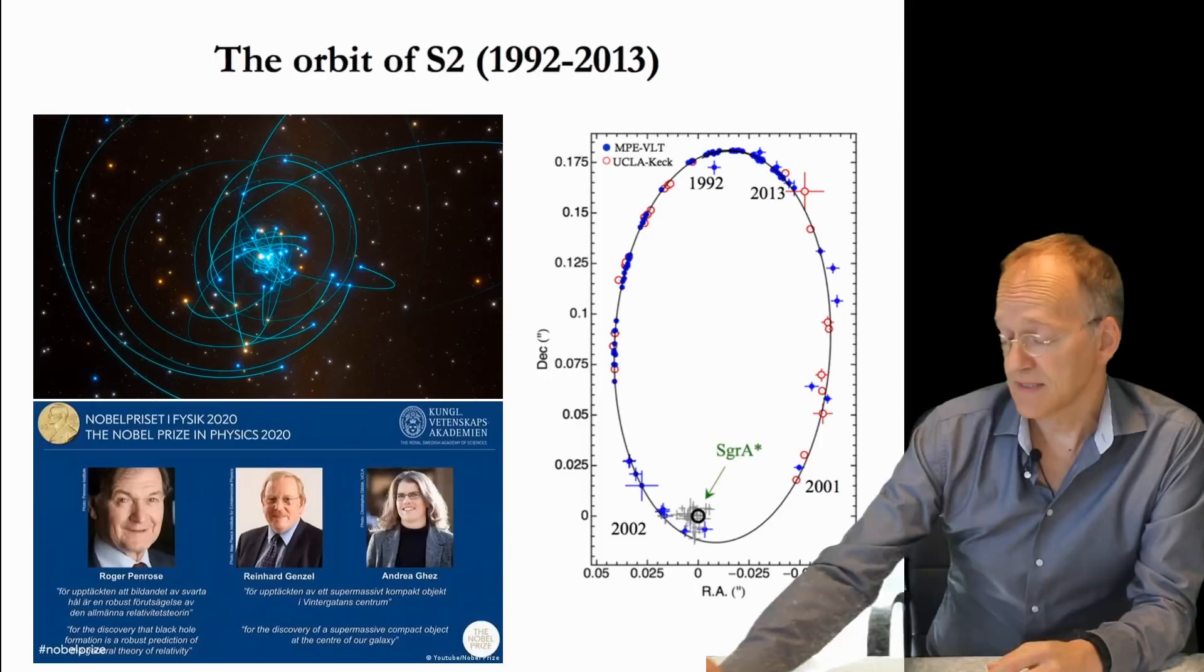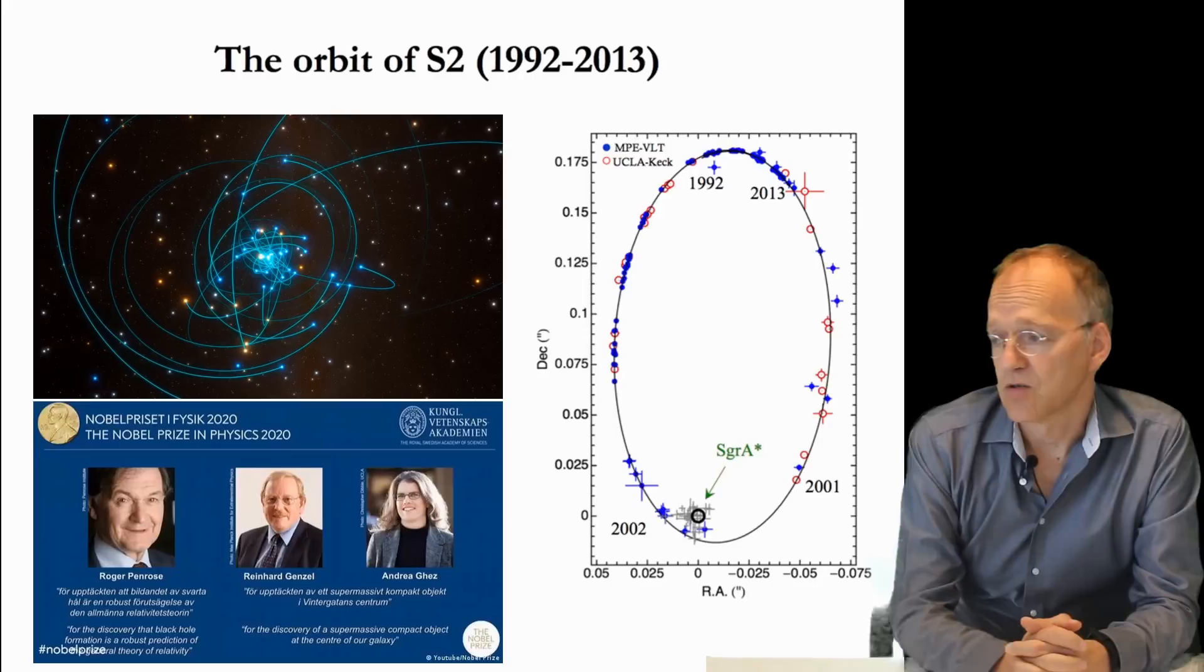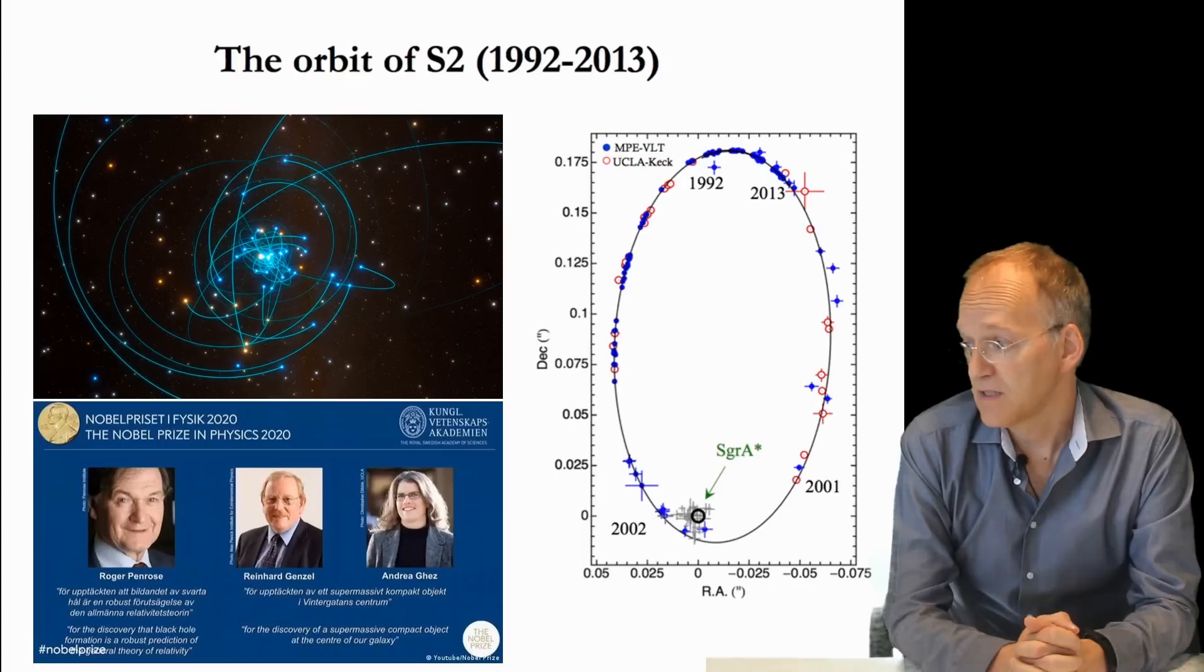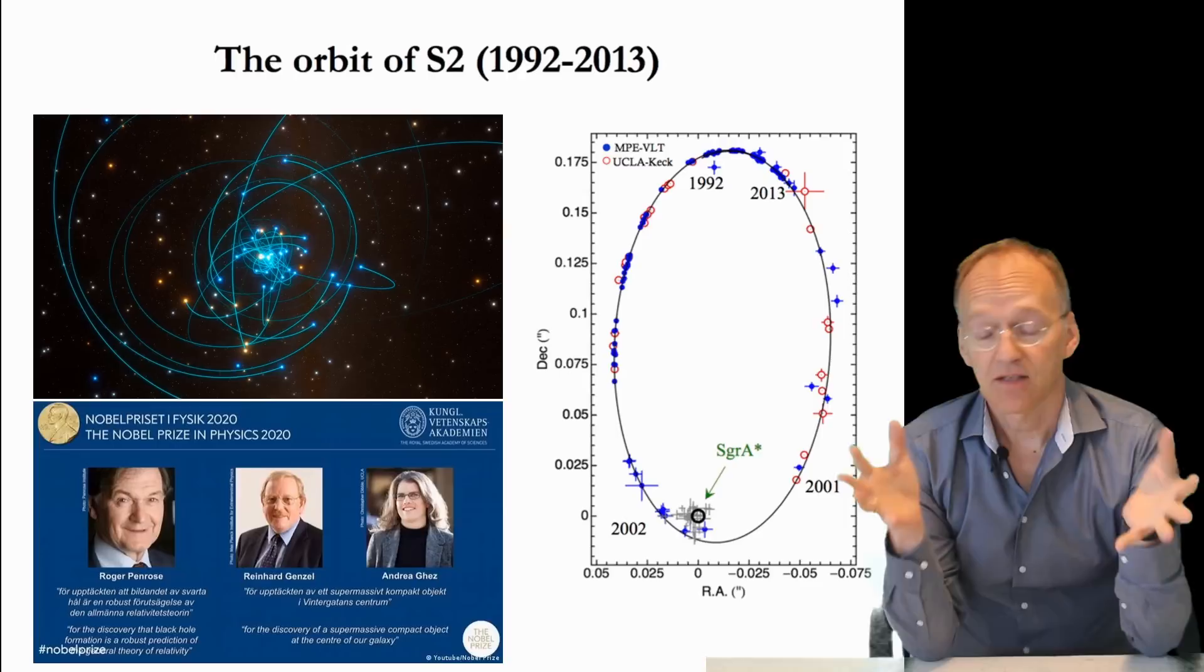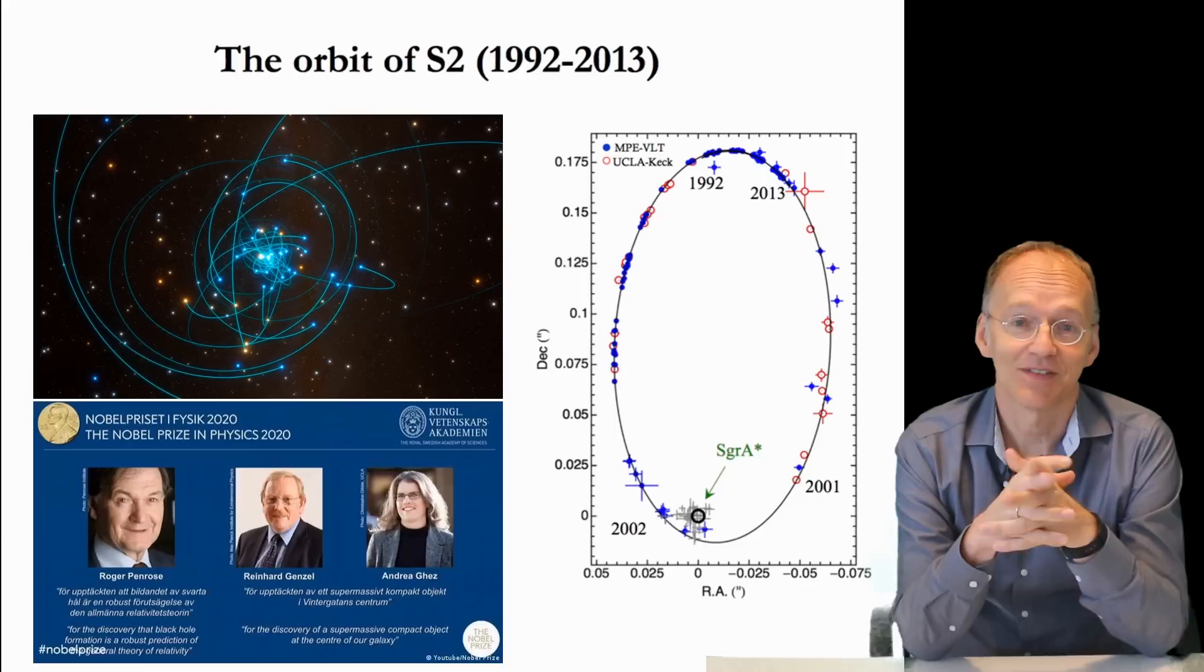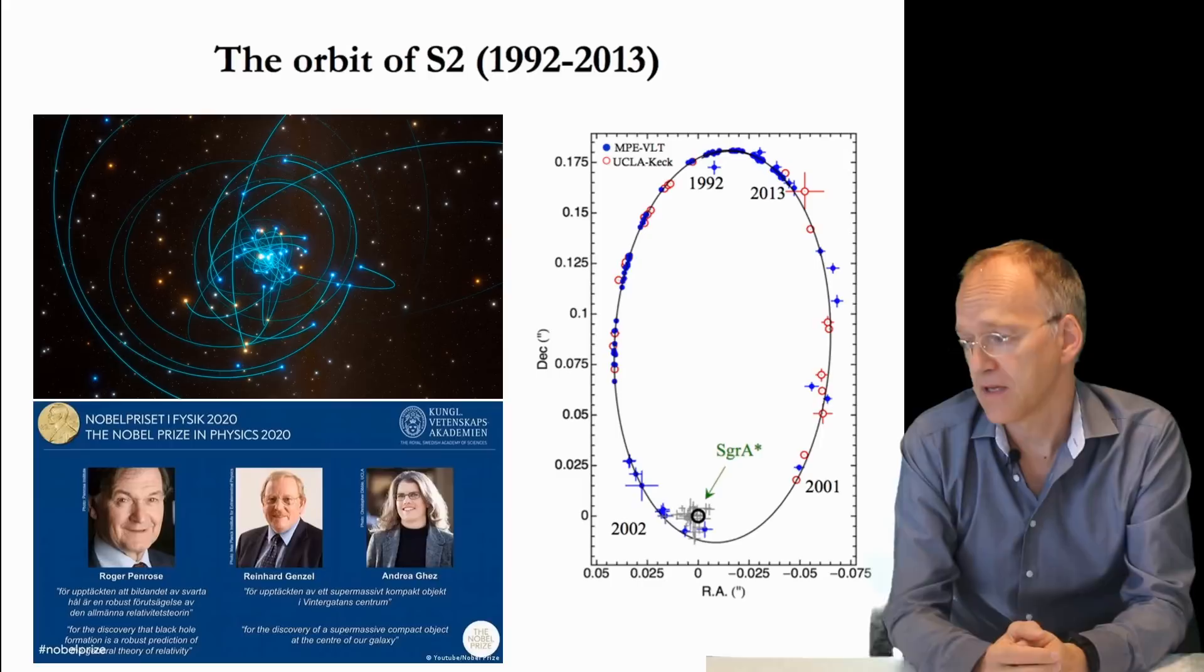What did deserve a Nobel Prize was the observation of stars orbiting the center of our galaxy—fantastic observations which certainly deserved the prize. They observed with very much patience a Kepler orbit, and if you do the calculation, you have a mass concentration of more than four million solar masses, and you do not see anything—it's just black there. So the idea is not far-fetched if you think that there might be something like a black hole.